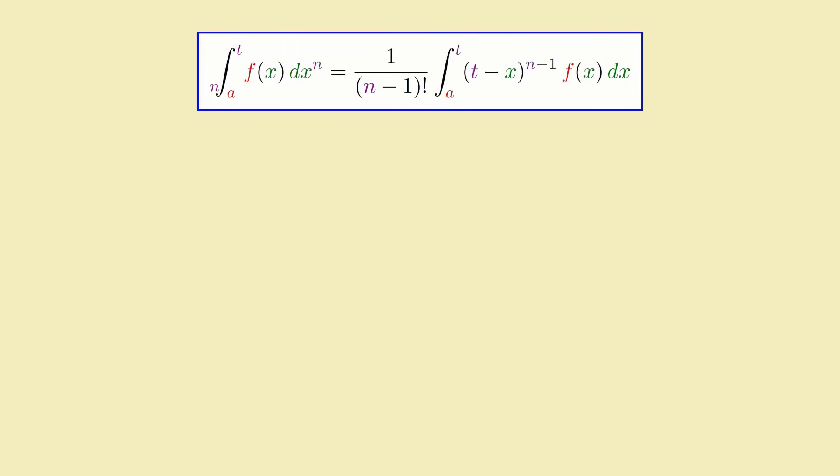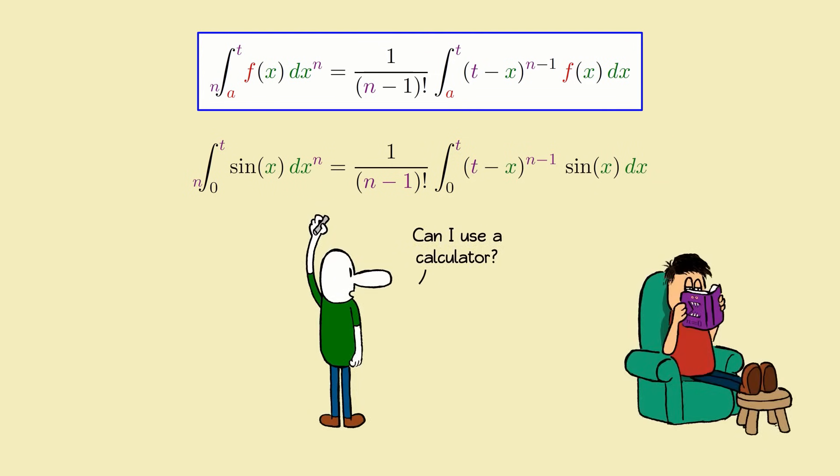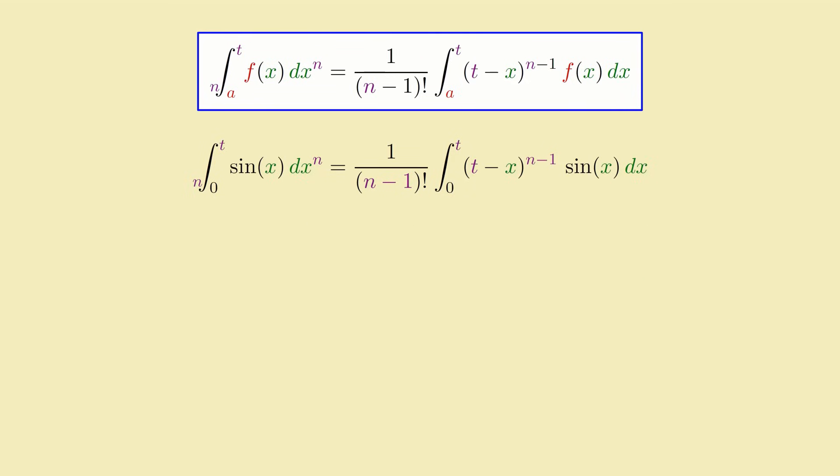Also, I should be upfront here that although this formula allows you to turn multiple repeated integrals into just one, it's probably not that useful for calculating them symbolically most of the time. This is because, other than a few special cases, computing the integral of (t minus x) to the (n minus 1) times a function will most likely mean doing integration by parts (n minus 1) times, and so you'll end up doing n integrations anyway.